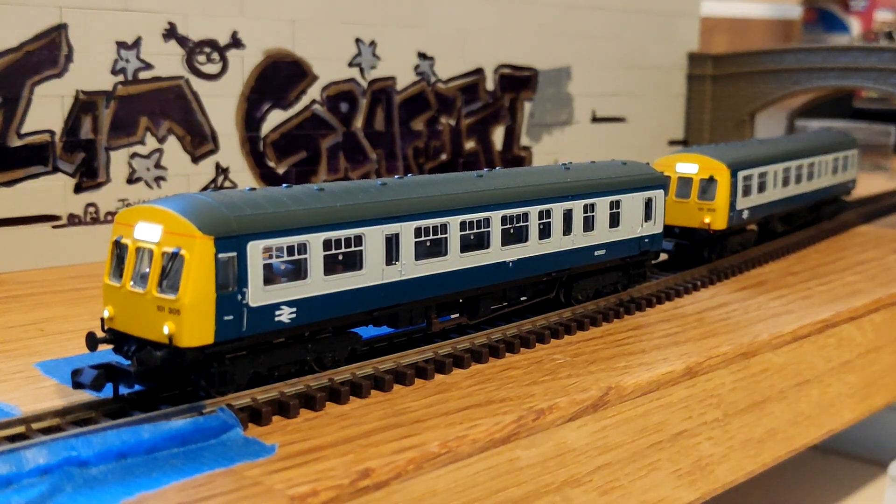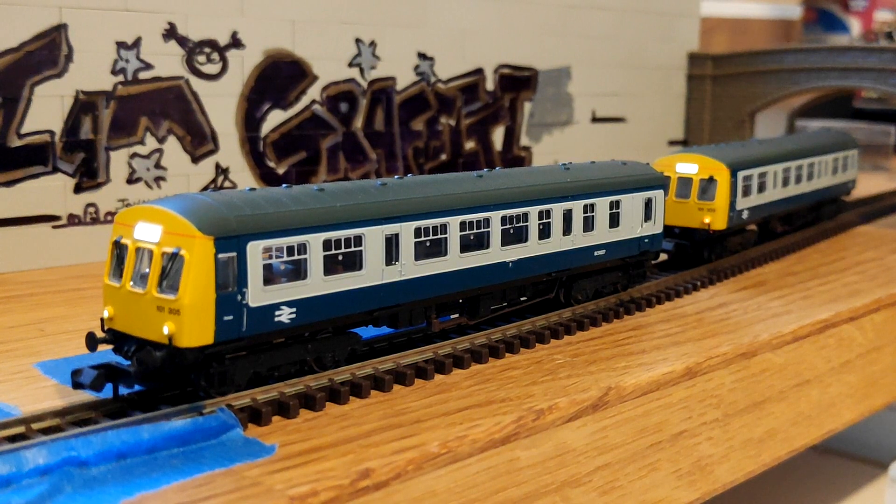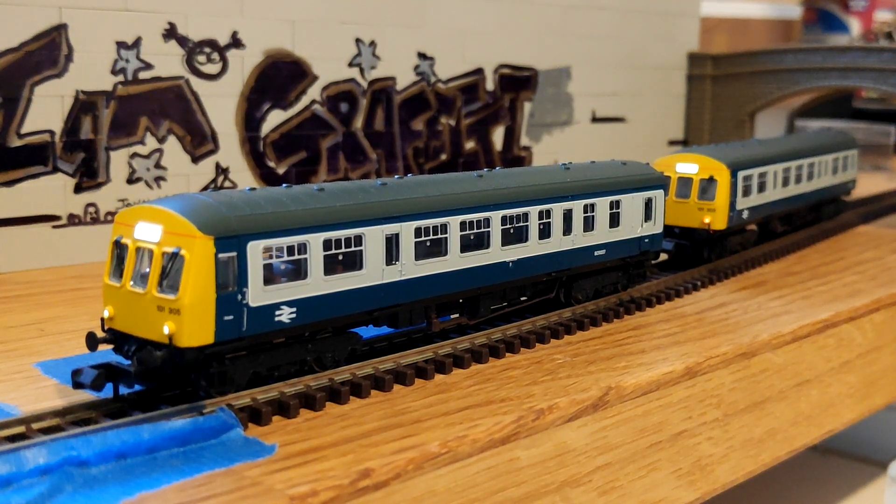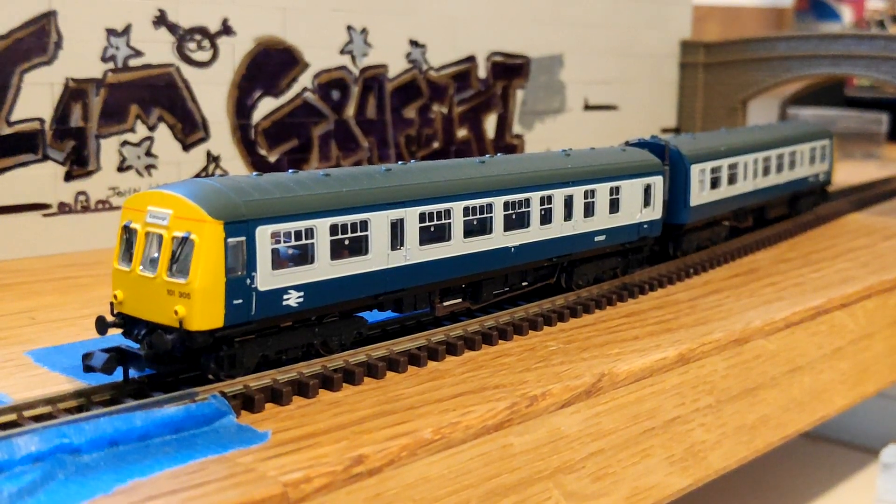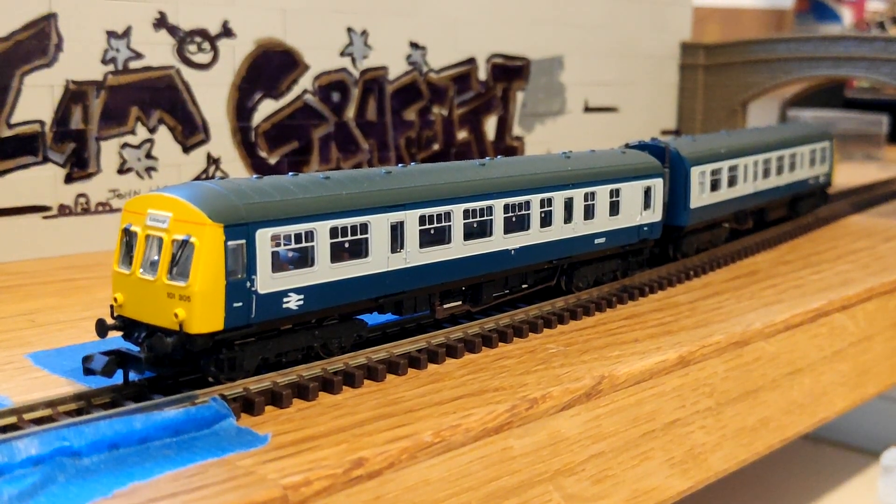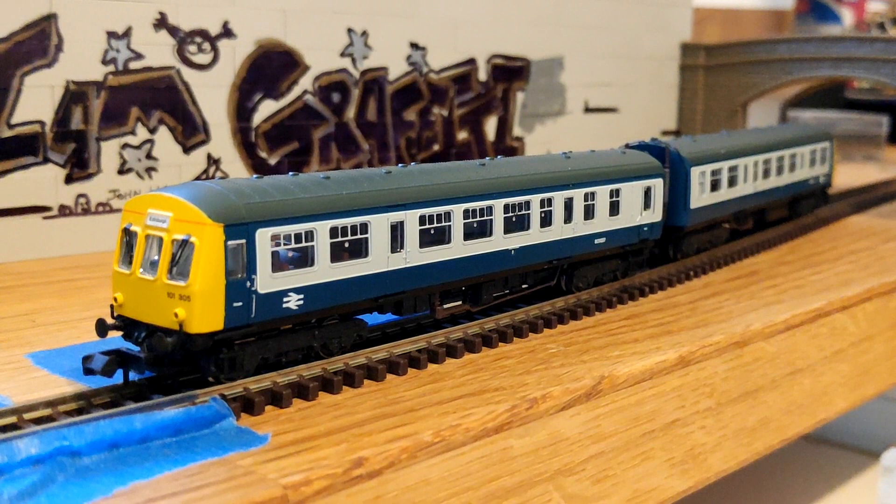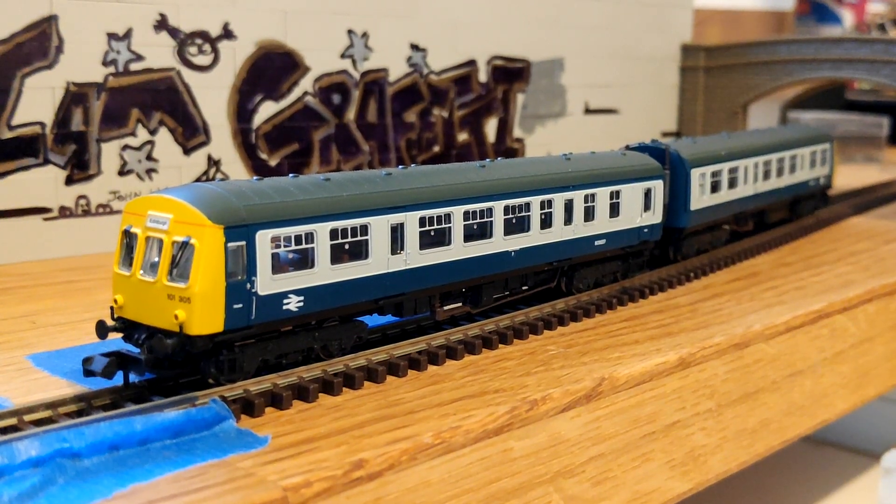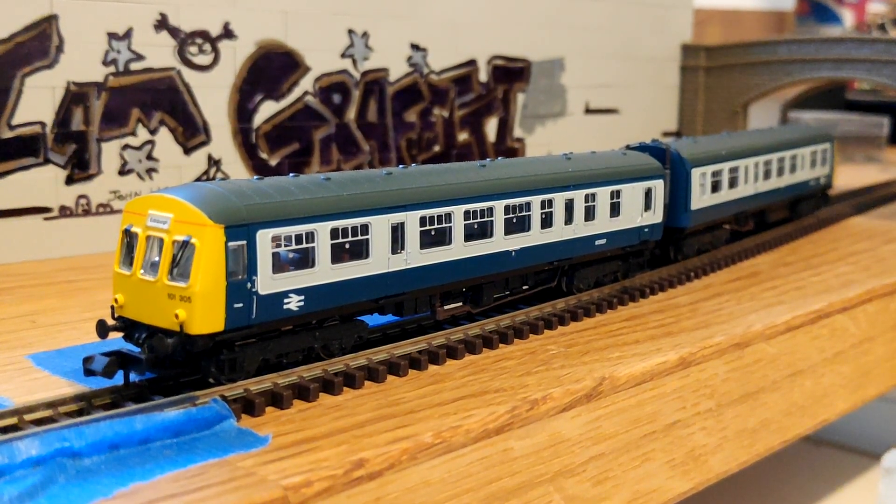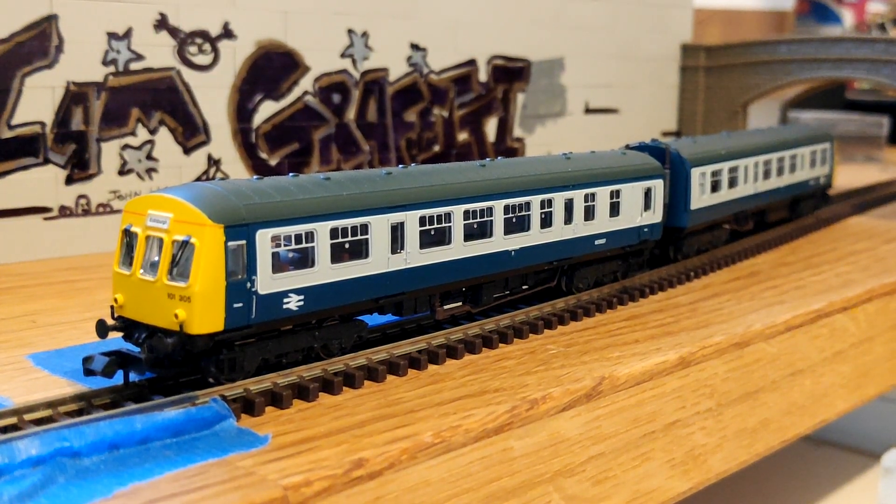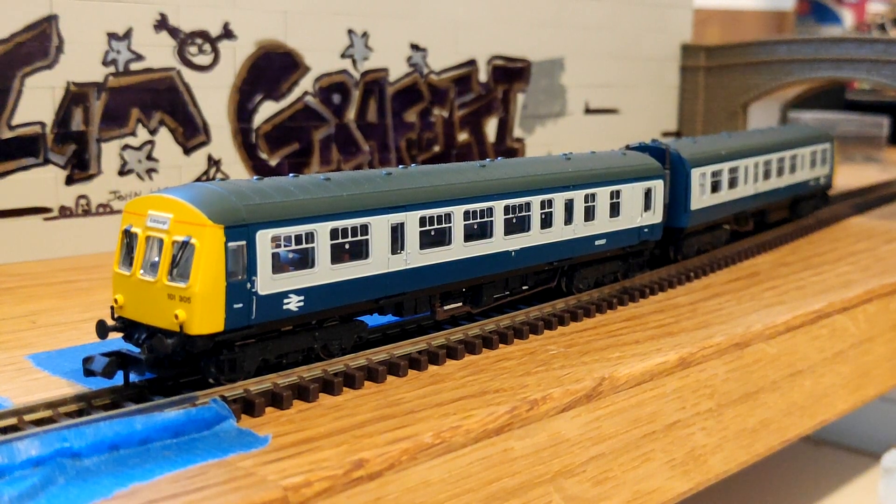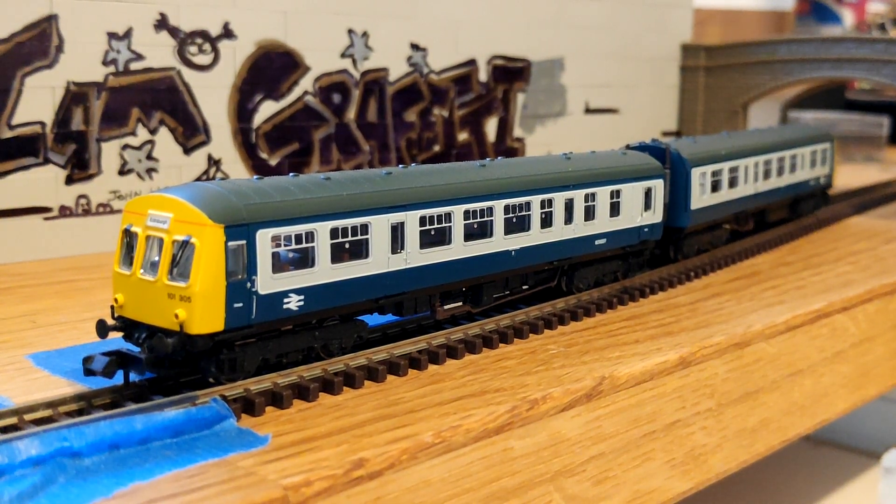So really, for the sake of say about a tenner, maybe a little bit more, just get yourself a six pin decoder and put it in your dummy. And just make it copy what this one's doing, and then just reverse the light direction and jobs are good. So let's have a little bit of a run and see what it's like. Okay, first things first then. Let's start her up.